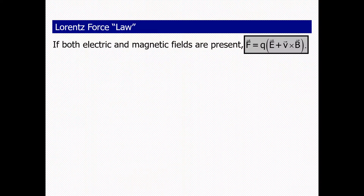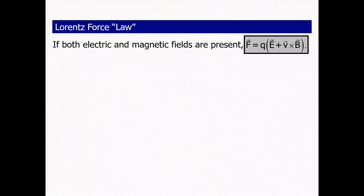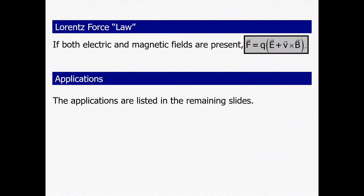The Lorentz force applies when both electric and magnetic fields are present. The total force is F = q(E + v×B), which is the summation of the electric force and the magnetic force. This is the Lorentz force law, and its applications will be discussed in the coming slides.